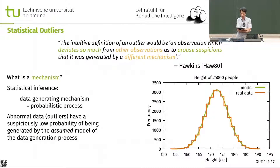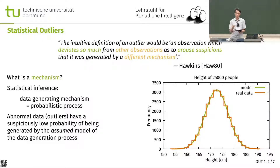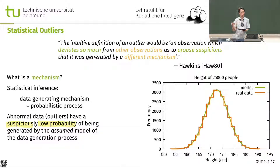Hawkins in the 80s had a very classic example — we're talking about mechanisms that are generating the data. If we are looking at statistical inference, there's always an assumption that we model the data as some probabilistic process. Then we can talk about how usual or unusual values are. Outliers are abnormal data with a suspiciously low probability. Moving to this more formal definition, we can eventually talk about three-sigma outliers in univariate data — a point where the model we have does not fit and does not explain these points very well.